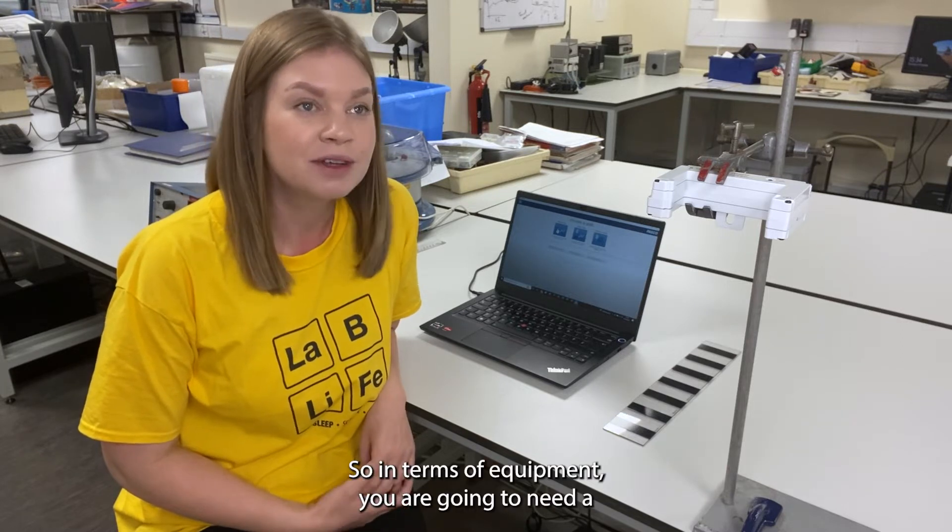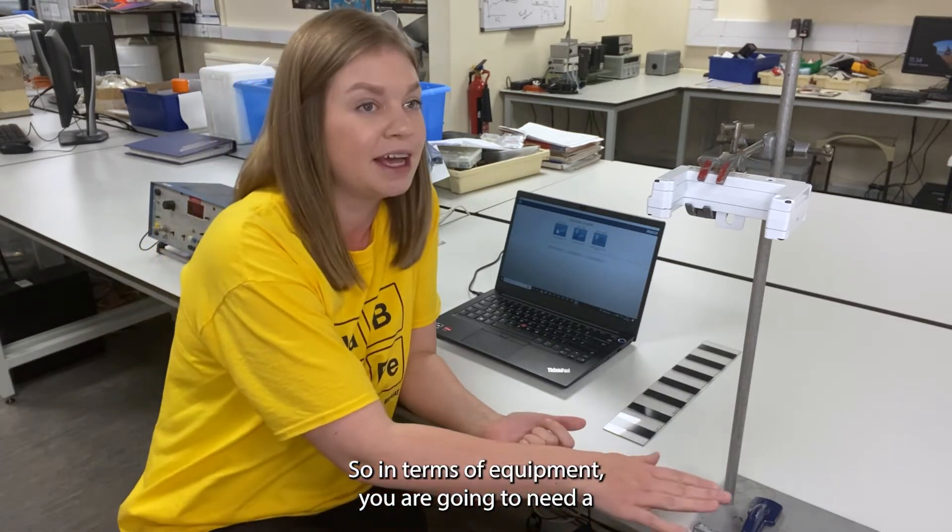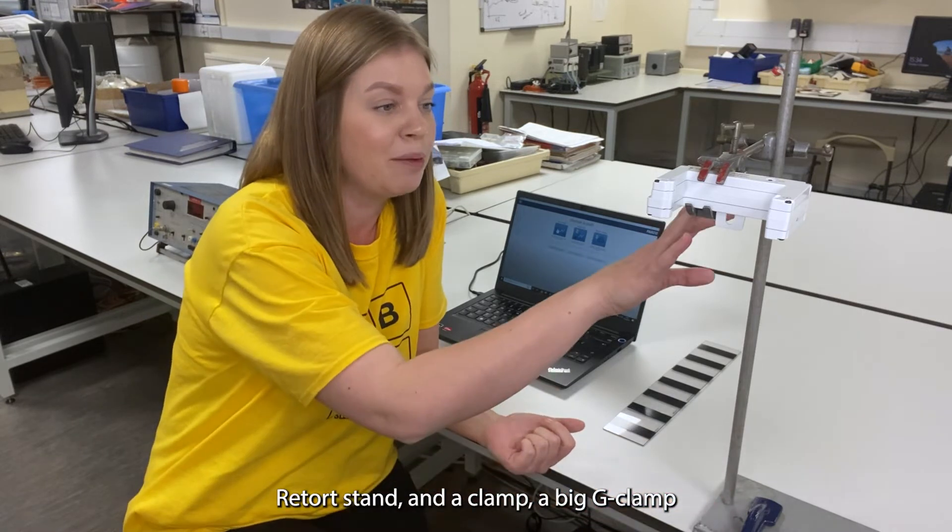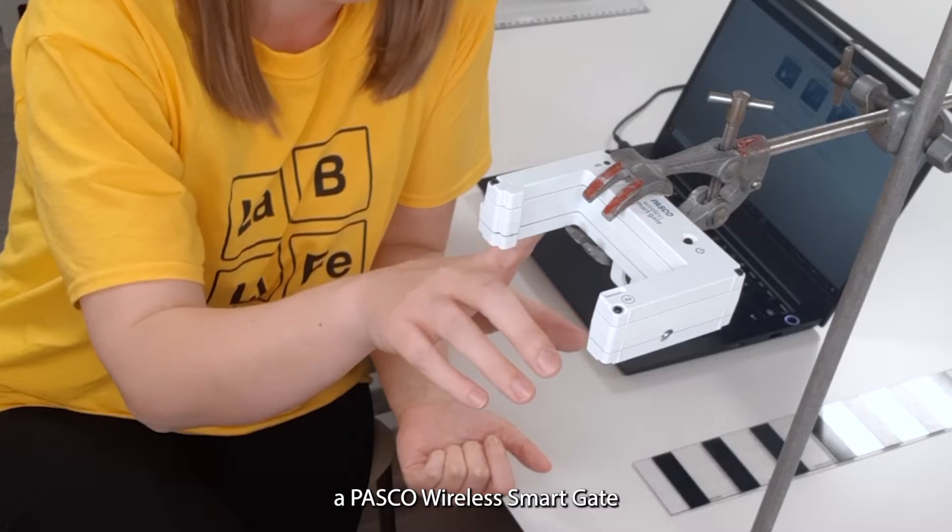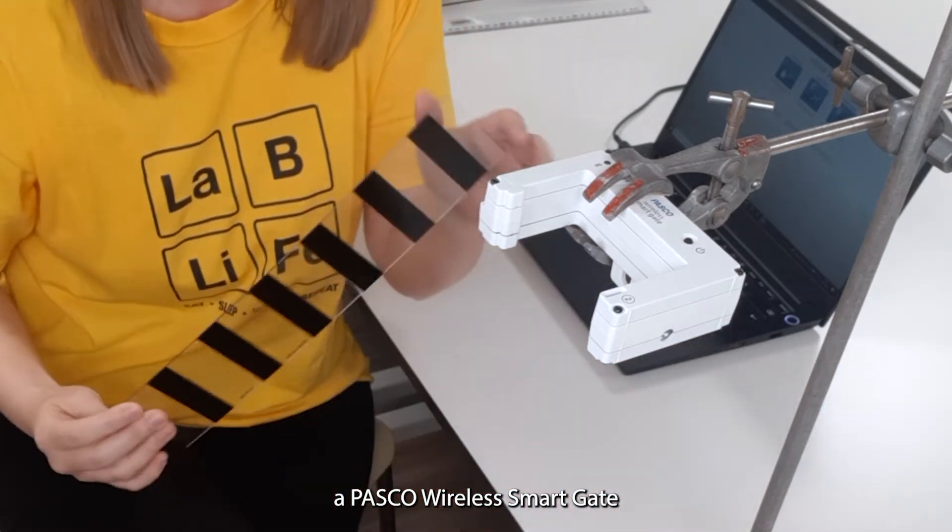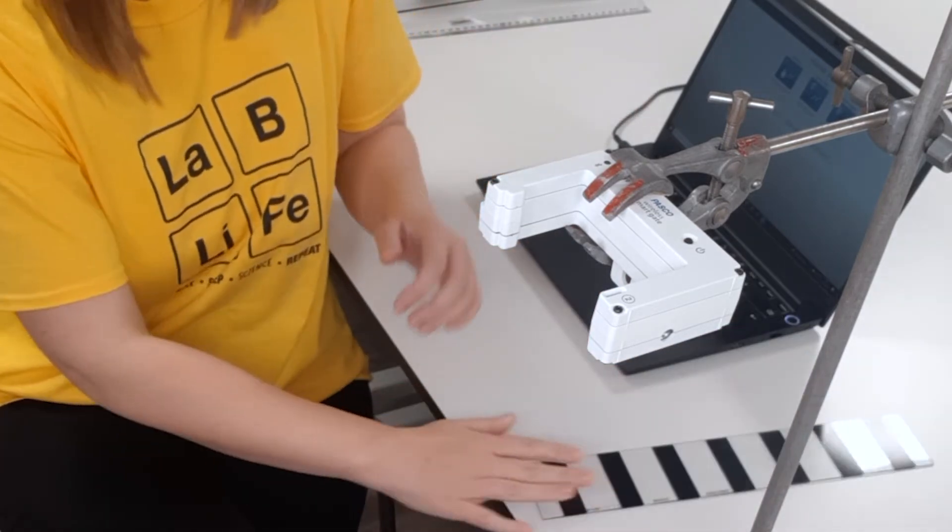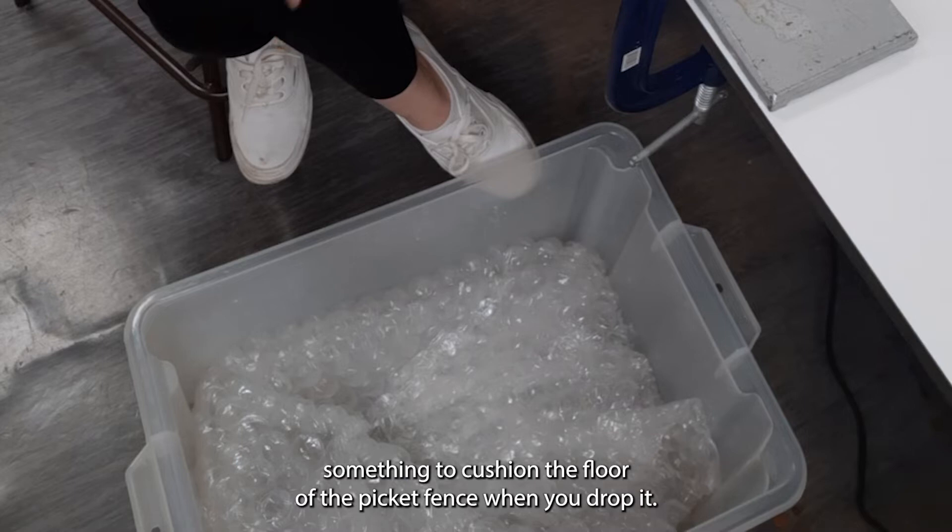Okay, so in terms of equipment you are going to need a retort stand and a clamp, a big G-clamp, a PASCO wireless smart gate, a picket fence, and something to cushion the floor when the picket fence drops.